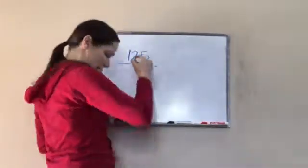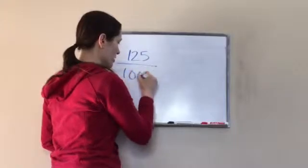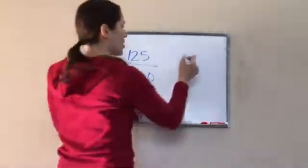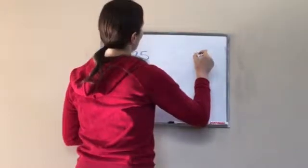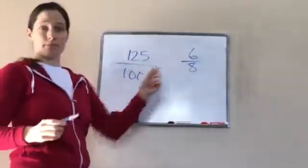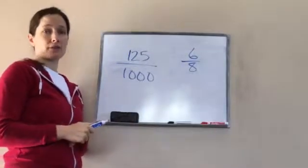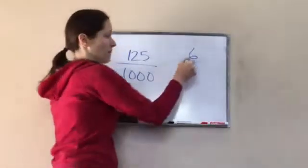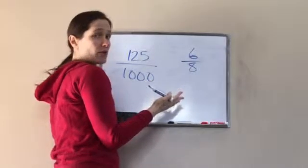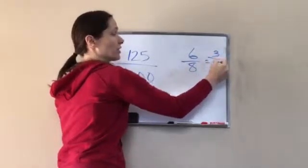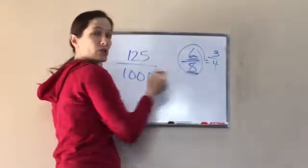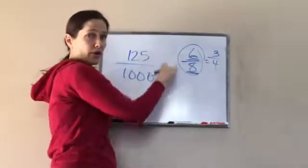Like this — if I told you to reduce 6/8, how would you do that? You could reduce it by two. You would divide both — 3/4. Very good. So it's pretty easy when you have small numbers in the fraction's numerator and denominator.